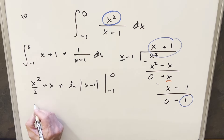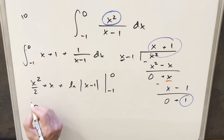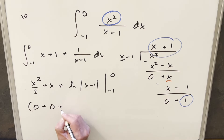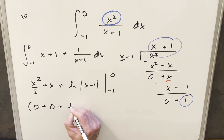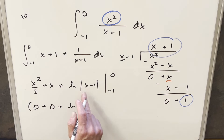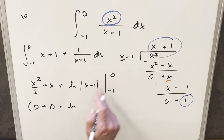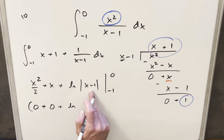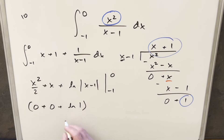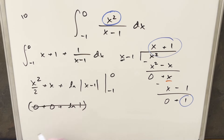Evaluating at 0: x squared over 2 gives 0, x gives 0, and natural log of the absolute value of 0 minus 1 is natural log of 1, which equals 0. So the entire upper-bound evaluation is 0.